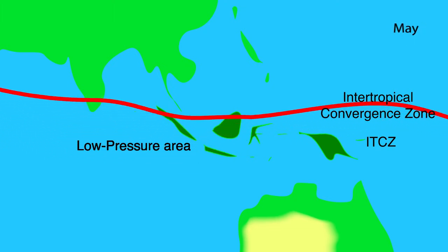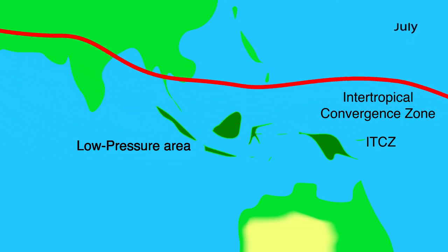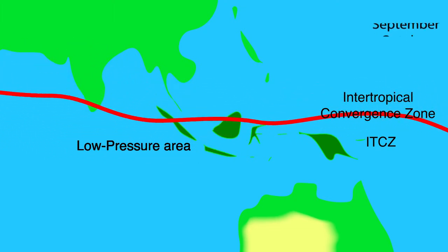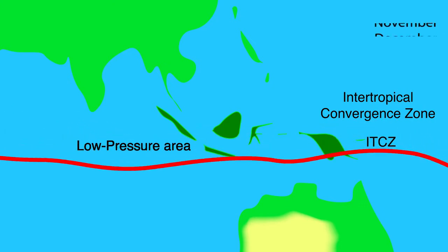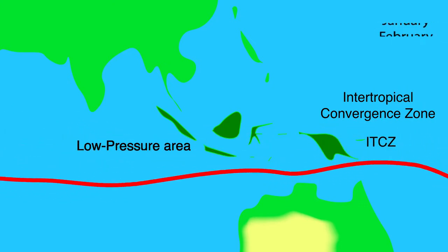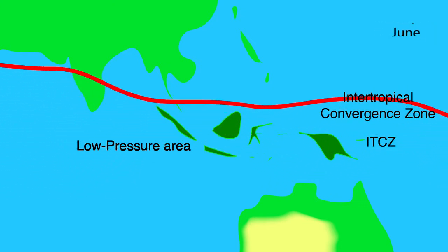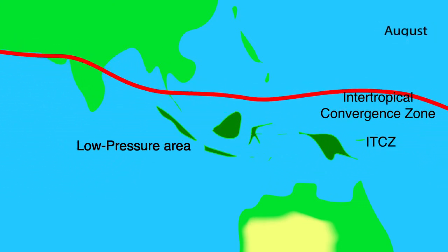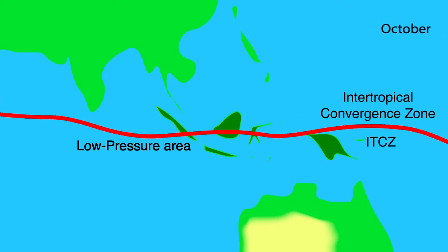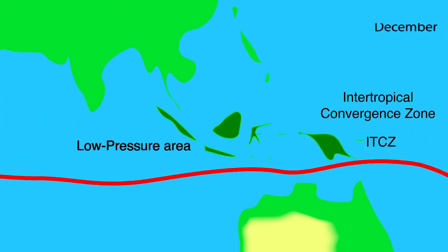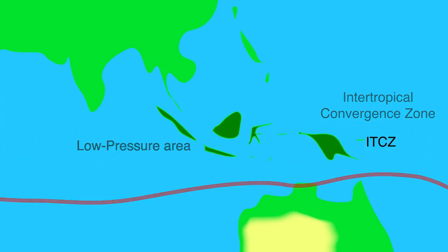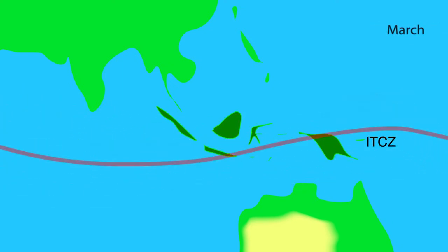Because the energy of the sun varies per season, so does the exact location of the ITCZ, causing a precipitation pattern between the Tropic of Capricorn and the Tropic of Cancer where rain and dry seasons exist.